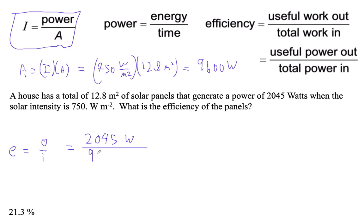And that's our input. And then we can go 2,045 divided by that guy. And that gets us 0.2130208. So that is 21.3% efficient. All right.